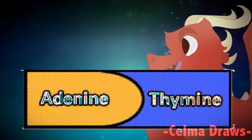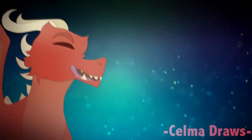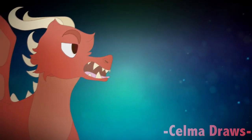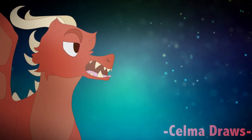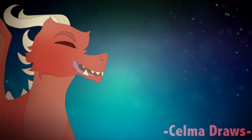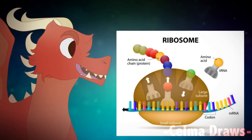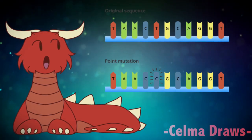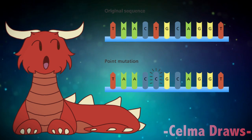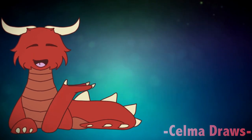Adenine and thymine go together, as well as guanine and cytosine. There are 20 amino acids. Ribosomes make amino acids by reading the DNA. A mutation can occur when the ribosomes make a mistake reading the DNA, like having green eyes.